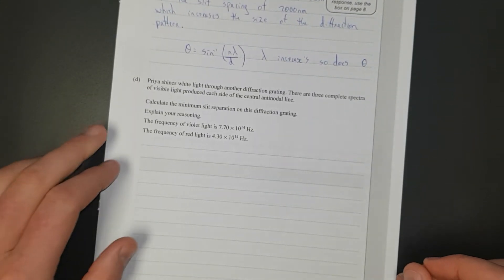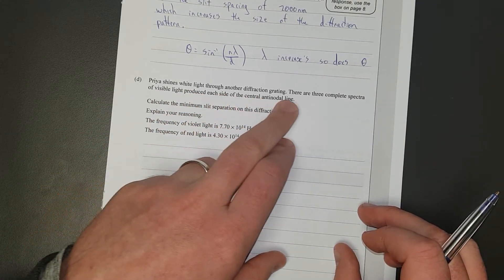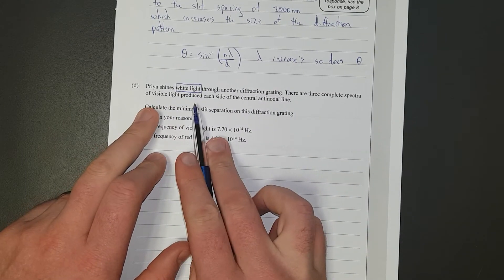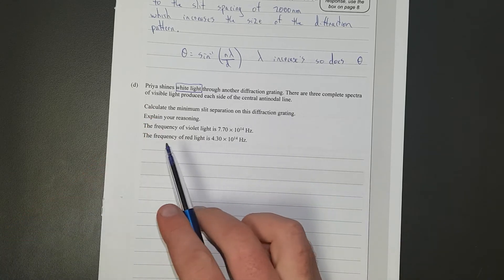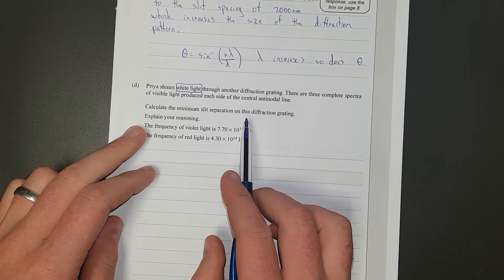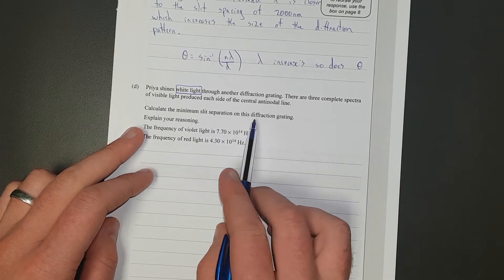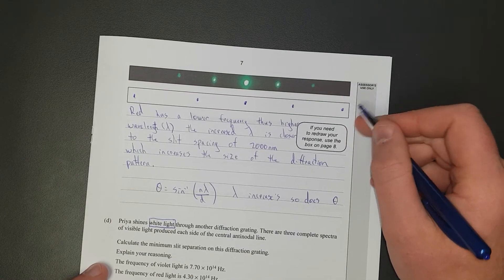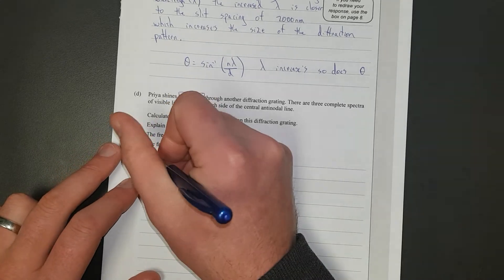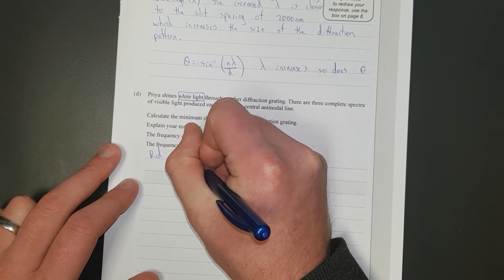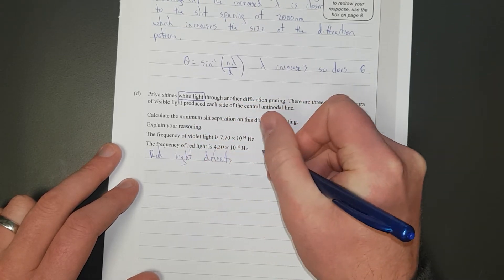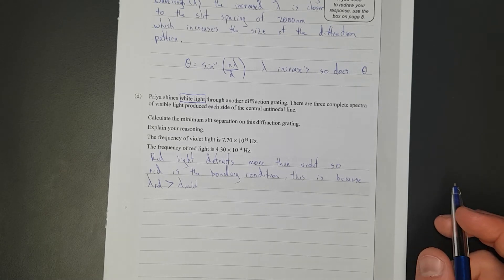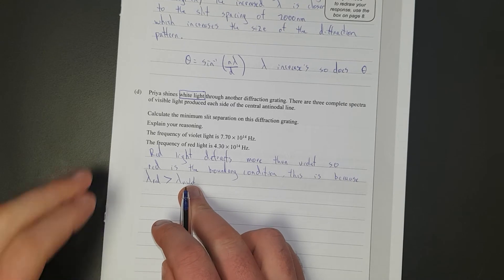Next question. Priya shines white light through another diffraction grating. There are three complete spectra of visible light produced each side of the central antinode line. Calculate the minimum slit separation of this diffraction grating. Explain your reasoning. We know red light diffracts more from the get-go because we figured that up here. So red light diffracts more than violet, so red is the boundary condition. This is because the wavelength of red is greater than the wavelength of violet.